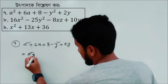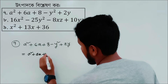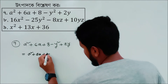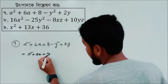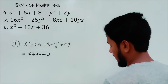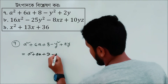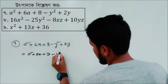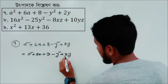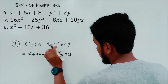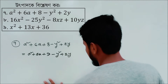6a plus 8 is 9. We have to check: 9 minus y squared plus 2y. We have to write 8 plus 9.